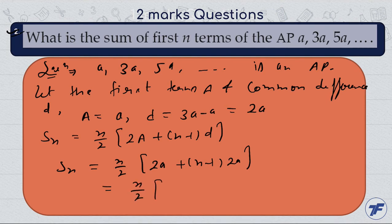So here n by 2, 2a plus 2a into n minus... 2a with 2a cancel out and 2 with 2 cancel out.